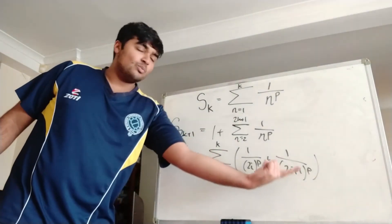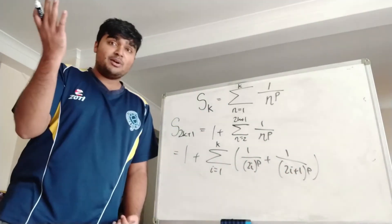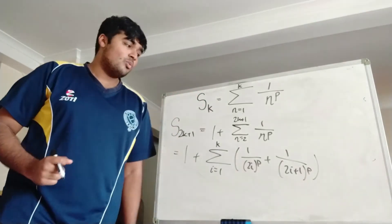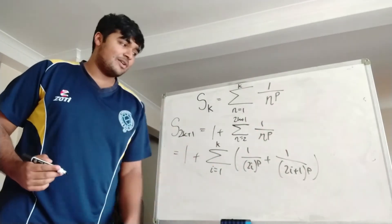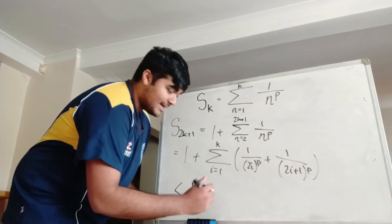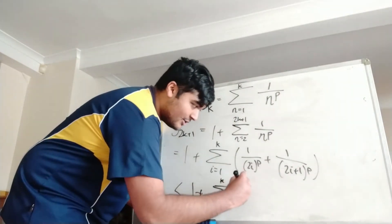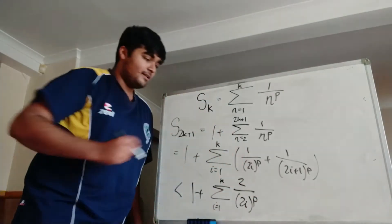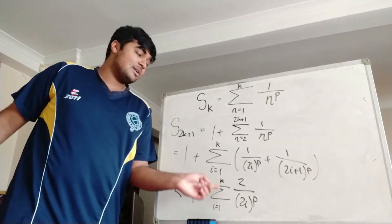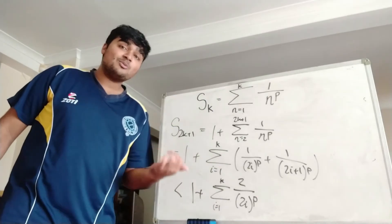We notice that 1 over (2i+1) to the p is strictly less than 1 over 2i to the p, because 2i+1 is bigger than 2i, so 1 over (2i+1) is less than 1 over 2i, and then raising both sides to the p preserves this. So S(2k+1) is less than 1 plus the sum from i equals 1 to k of 2 over (2i) to the p.